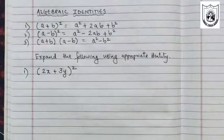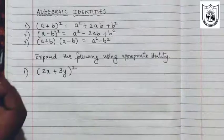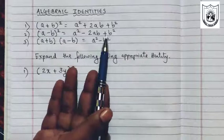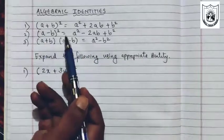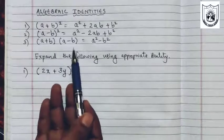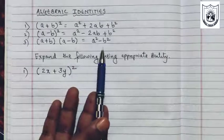We have learned about these three identities even in the number system chapter. That is a plus b the whole square formula is a square plus 2ab plus b square. A minus b the whole square formula is a square minus 2ab plus b square. A plus b, a minus b is a square minus b square.